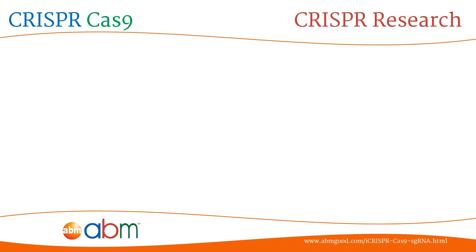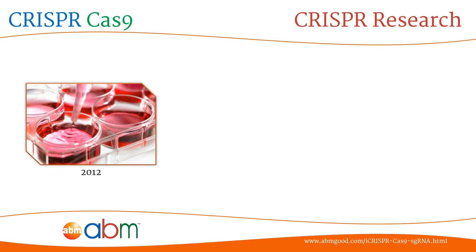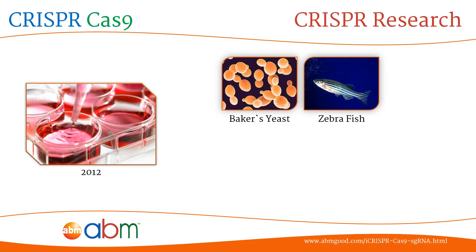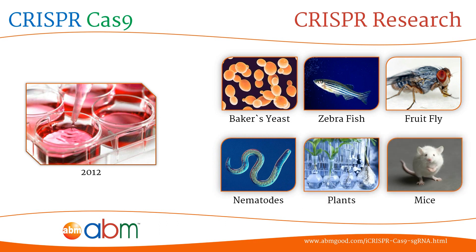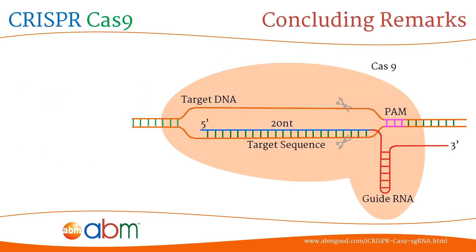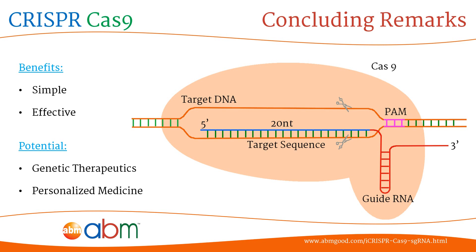CRISPR was first shown to work as a genome editing tool in human cell culture by 2012. Since then, it has been used in a wide range of organisms including baker's yeast, zebrafish, fruit flies, nematodes, plants, mice, and several other organisms. The CRISPR-Cas9 system offers the first alternative to current protein-based genome editing techniques such as zinc finger and TALEN. The simple and effective mechanism of CRISPR is considered a game-changer in molecular genetics and has been applied to many scientific fields. The CRISPR-Cas9 system shows extensive applicability in our modern healthcare system and has the potential to become the platform for genetic therapeutics and personalized medicine.